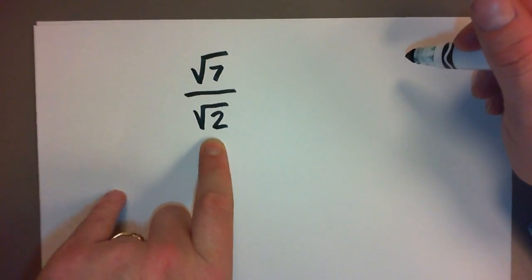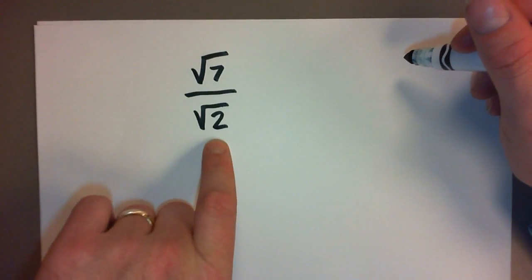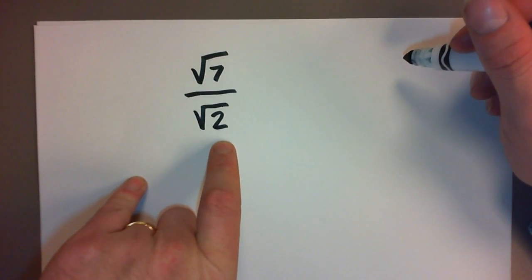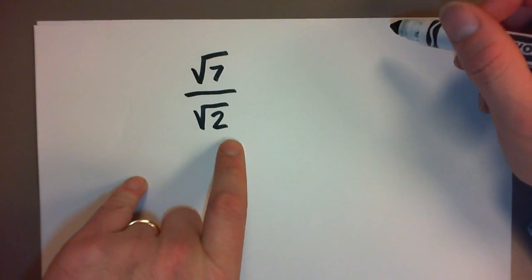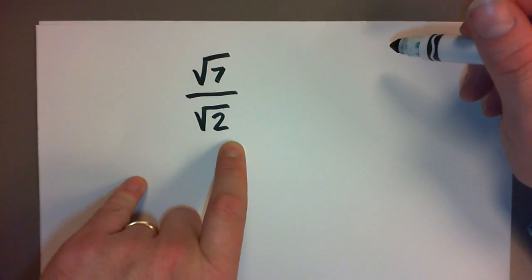This is a division problem and what I'd like to do is turn it into a division problem that doesn't have a square root on the bottom. So we call this rationalizing the denominator—it gives us a denominator that's a rational number.